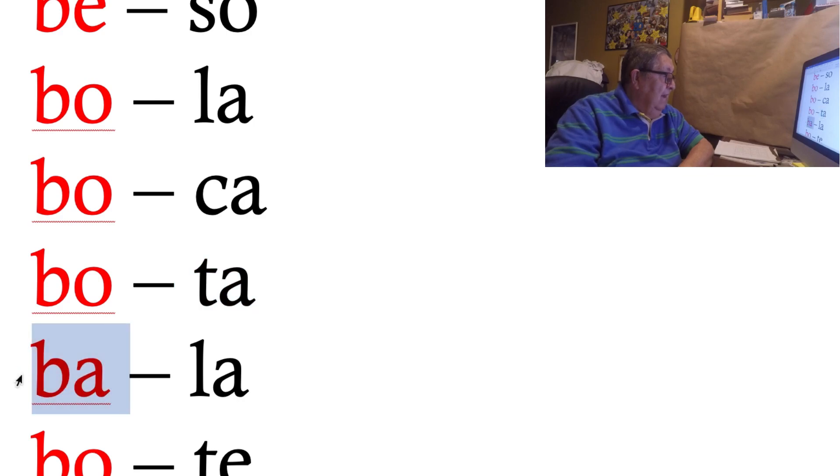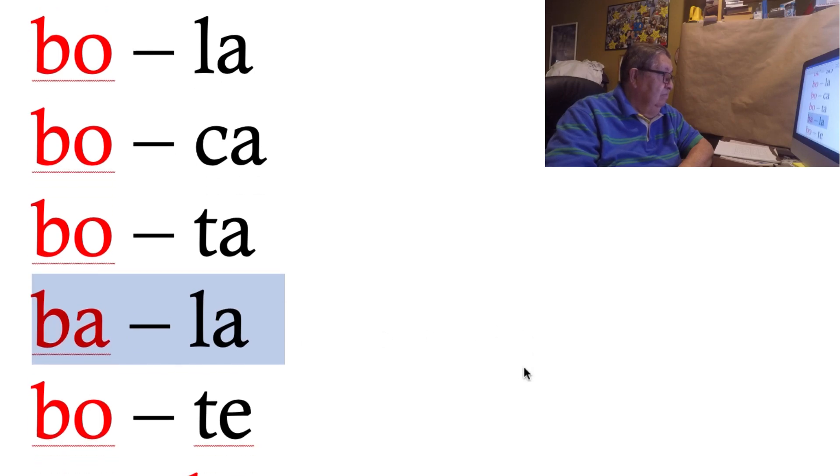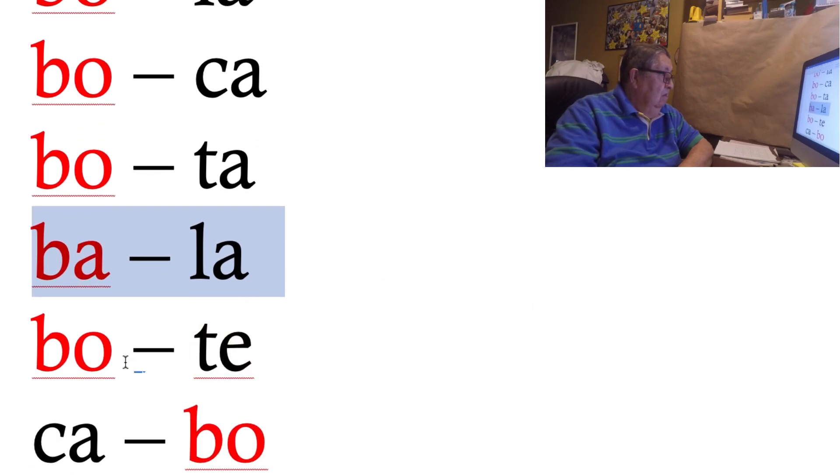Con la A, la B con la A es ba, la L con la A es la. Bala. La B con la O es bo y la T con la E es te. Este es un bote.